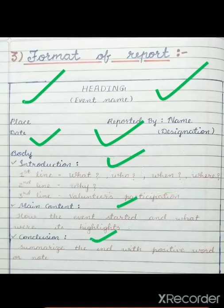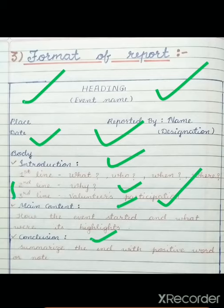The second line is not that important but depends on the event — write why that event took place. The third line covers volunteers' participation — who all participated in that event. These two lines are not compulsory but are based on the topic of the report.